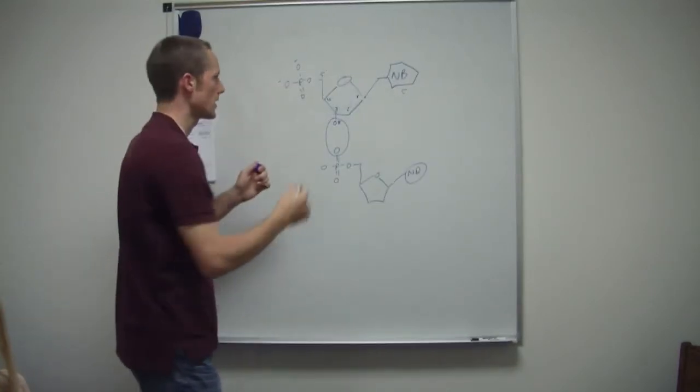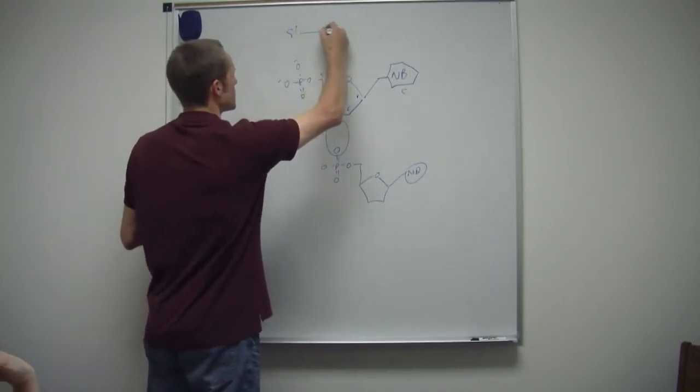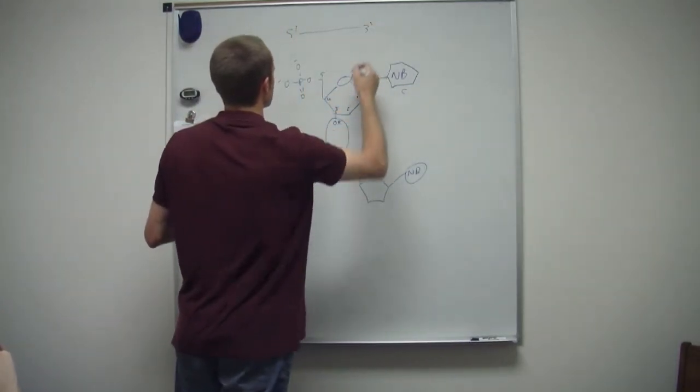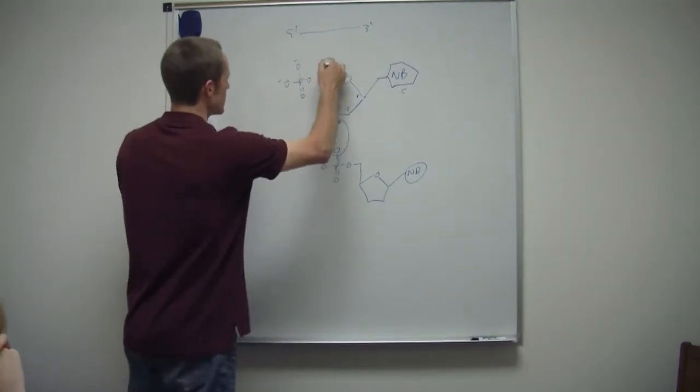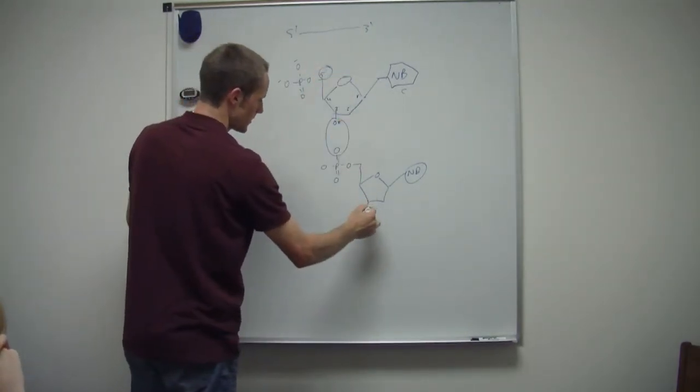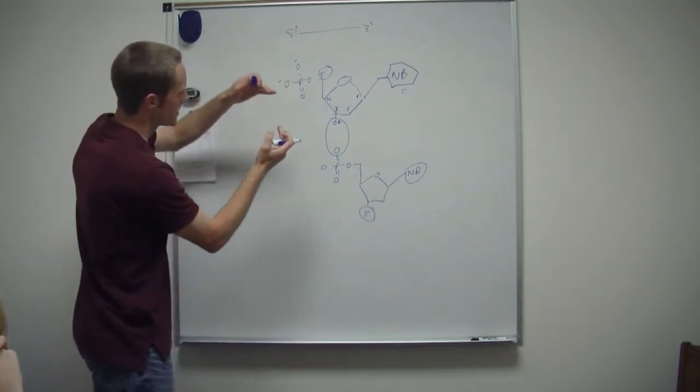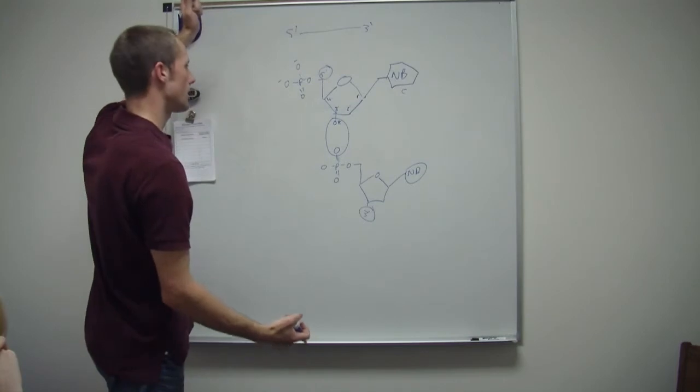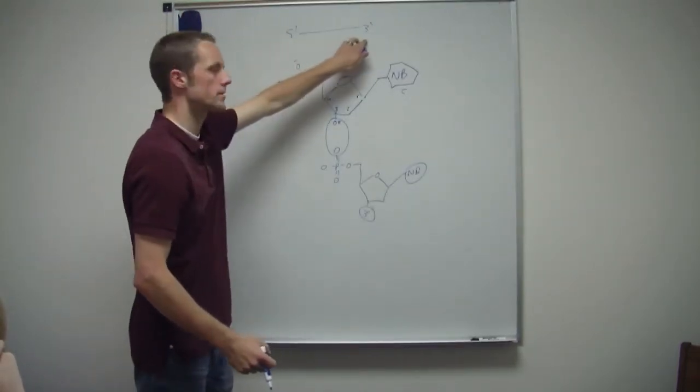So when you orient DNA or RNA, you'll see this kind of notation with the five prime and three prime. And that's referring to this. And then here's the three prime. Okay. So you can see when you stack a bunch of those together, five prime end and three prime end. So later on they'll just draw this.